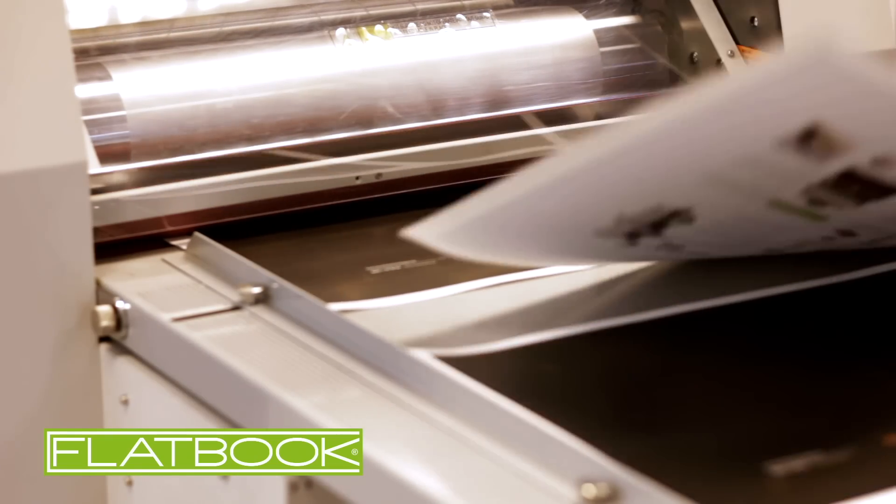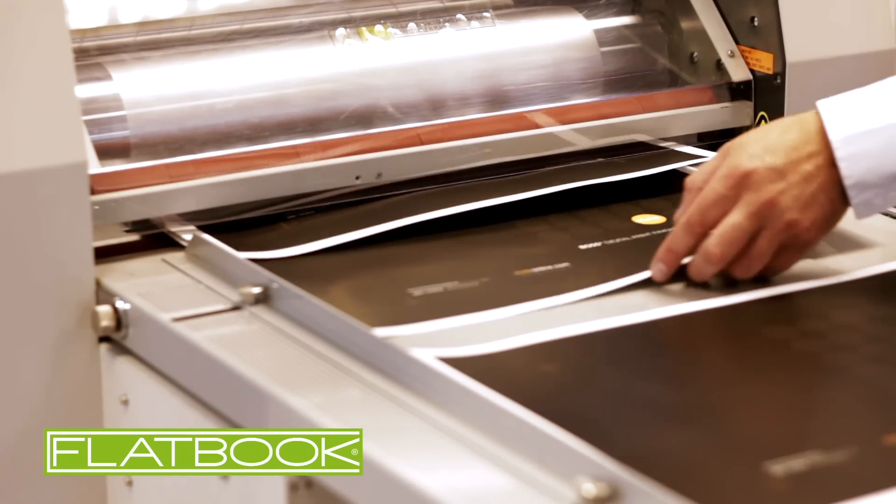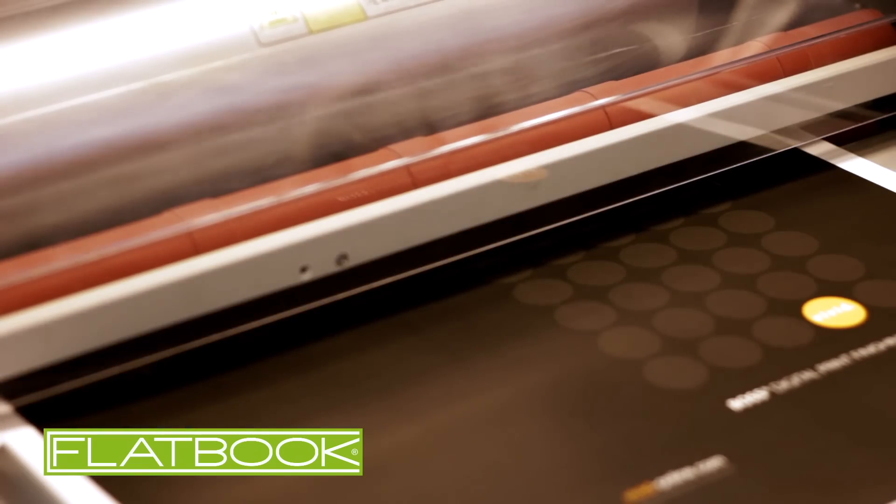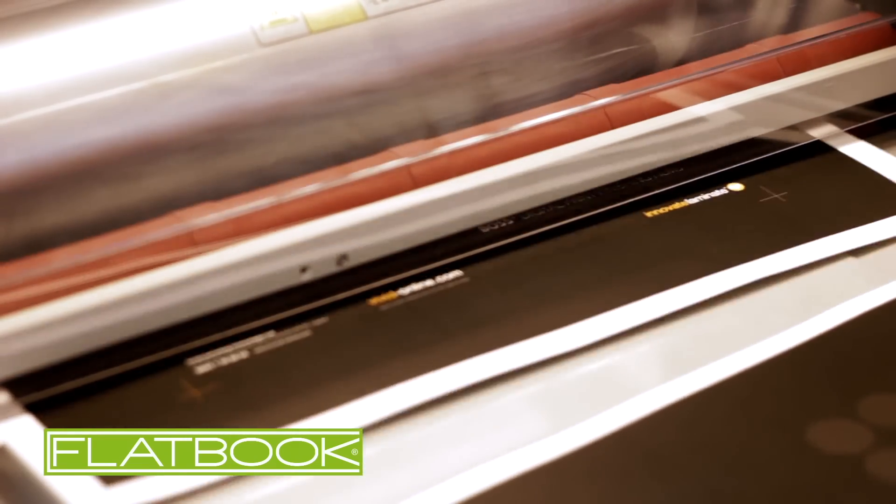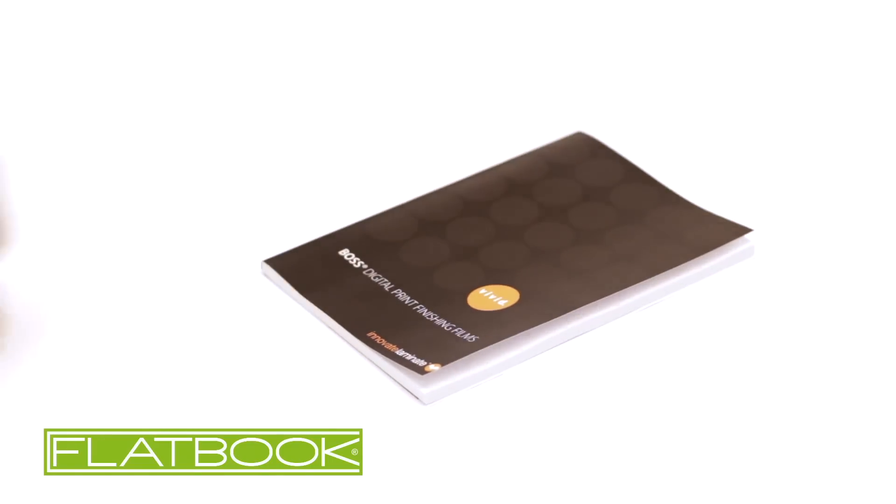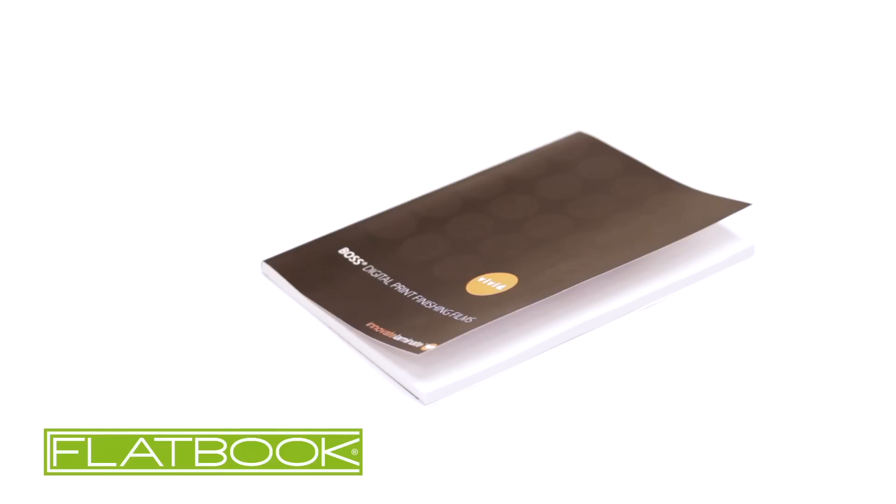Laminating a book cover both protects and enhances it with finishes available in many options. A book cover laminated on the front cover only could have a tendency to curl. To overcome this, customers have had to use specialist films which are expensive.